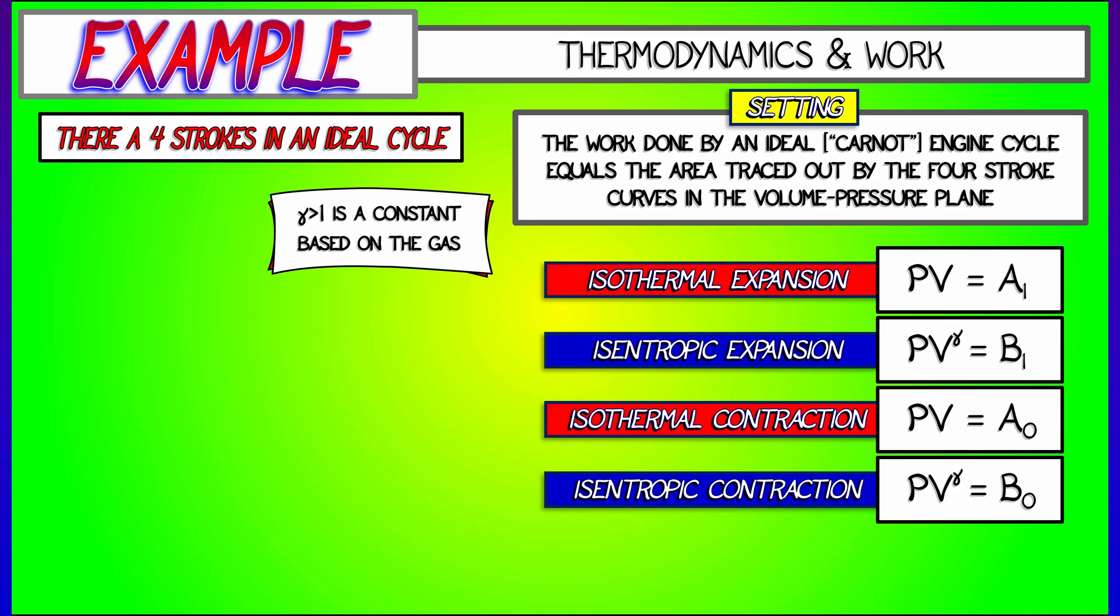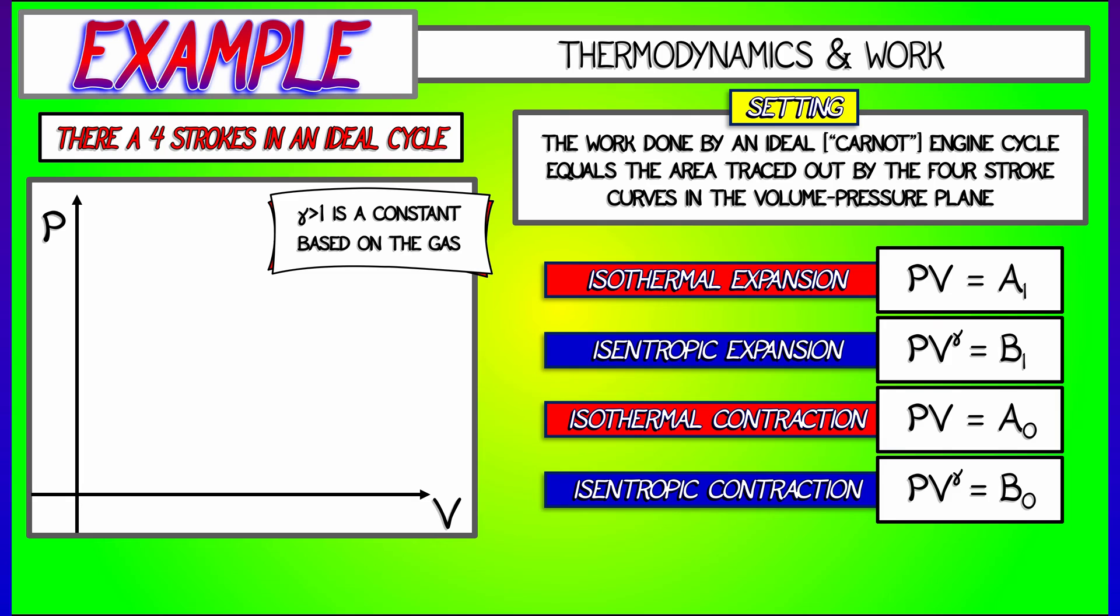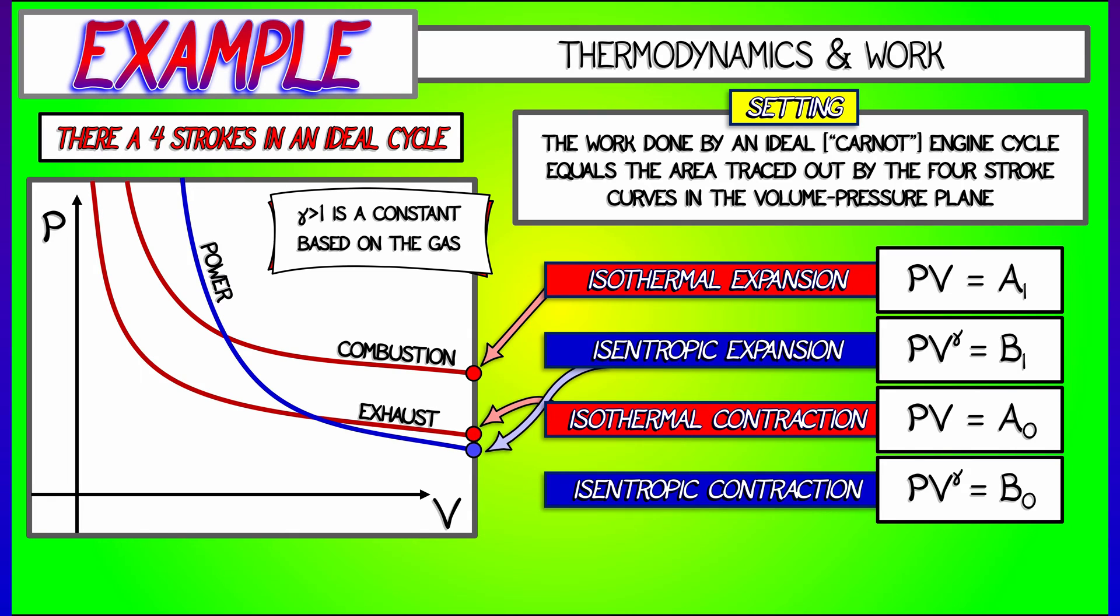Now, it's helpful to plot all four of these curves on the PV plane, plotting pressure as a function of volume. And you can think in terms of what happens when the volume is increasing and the pressure goes down or the volume is decreasing and then the pressure goes back up. And these four strokes, these four curves in the PV plane, trace out a region, a sort of a nonlinear kind of quadrilateral shape.